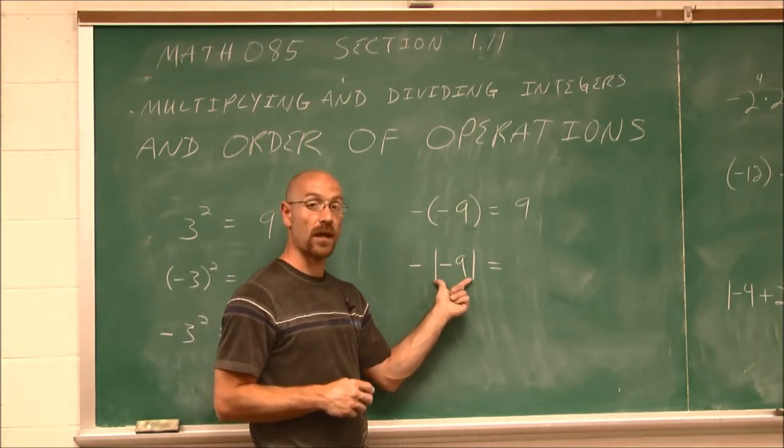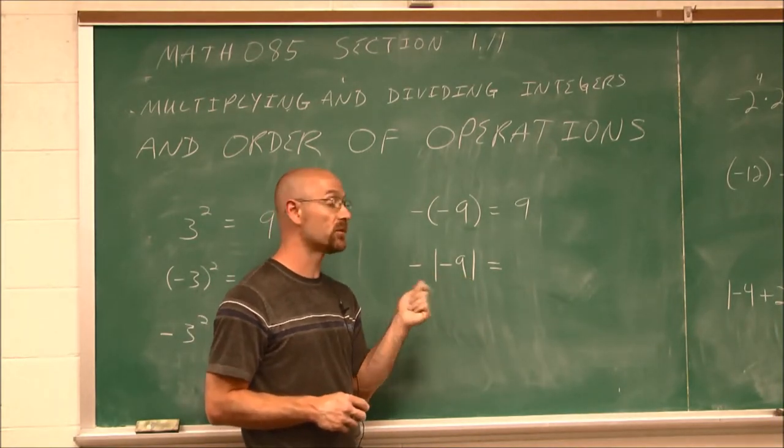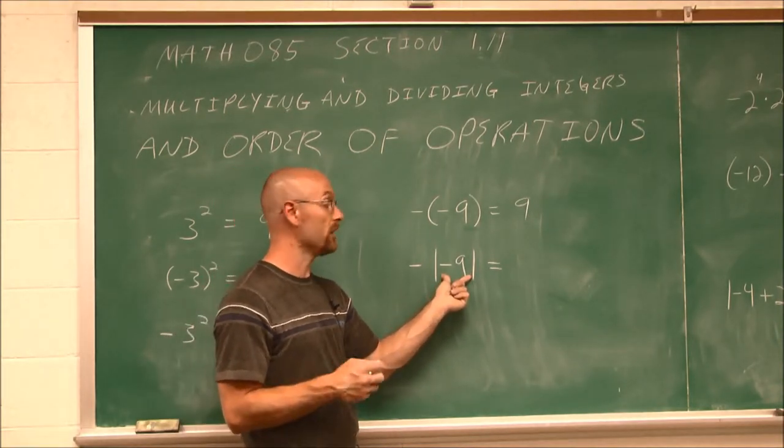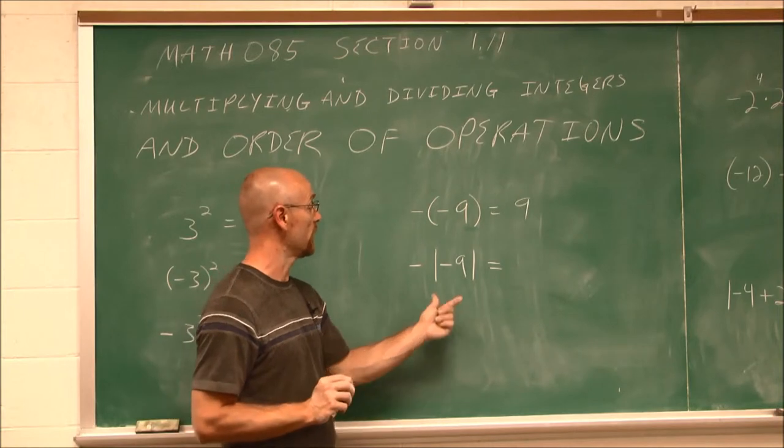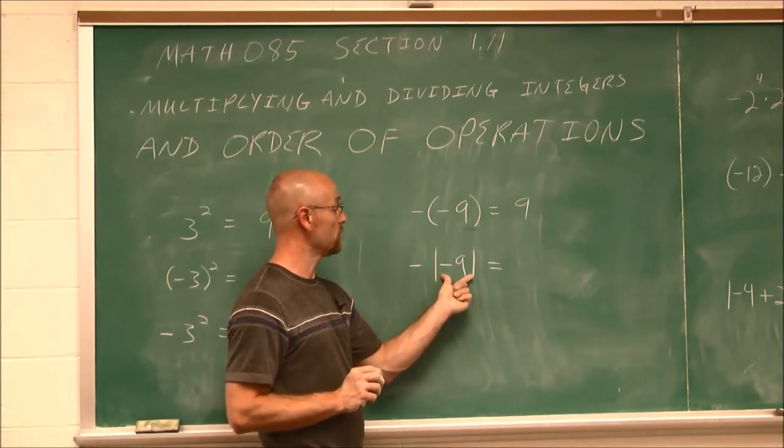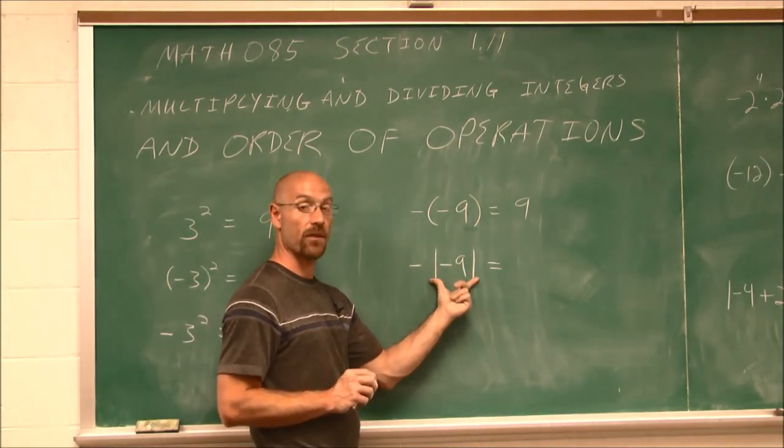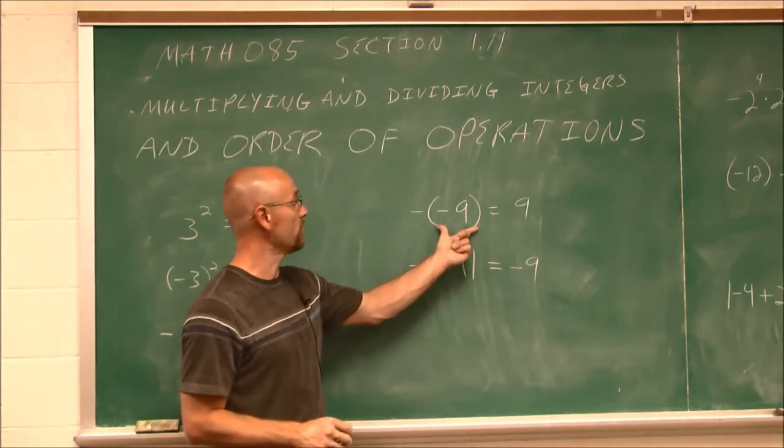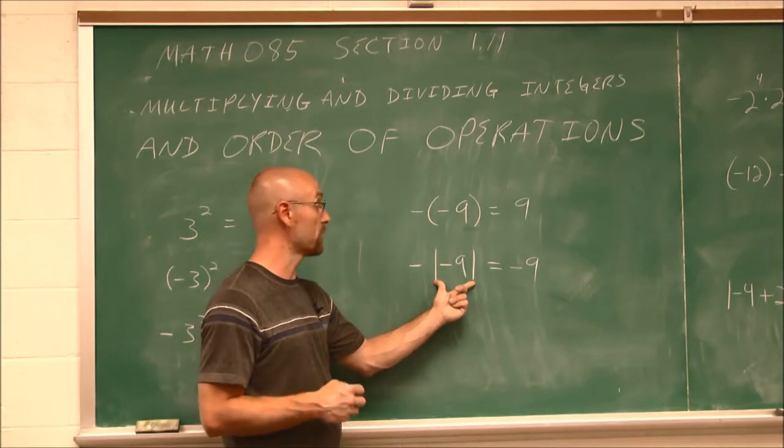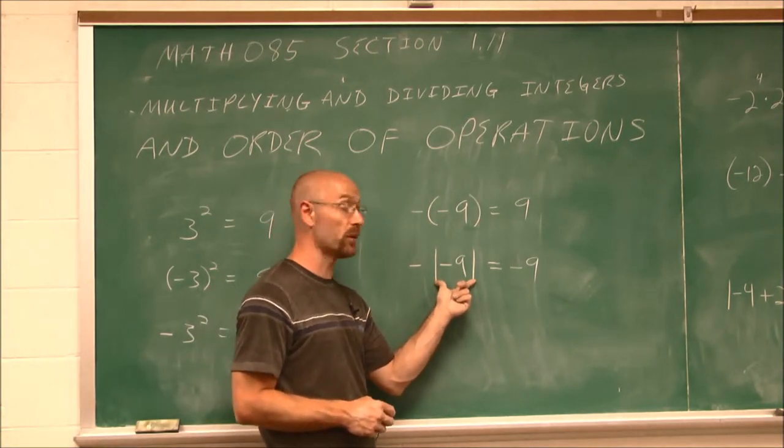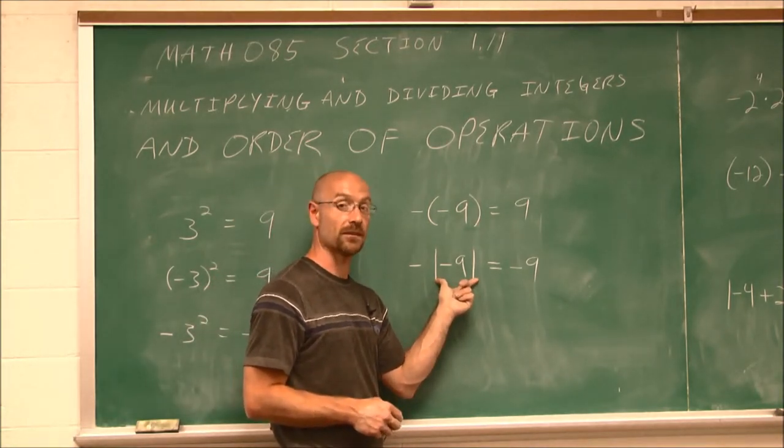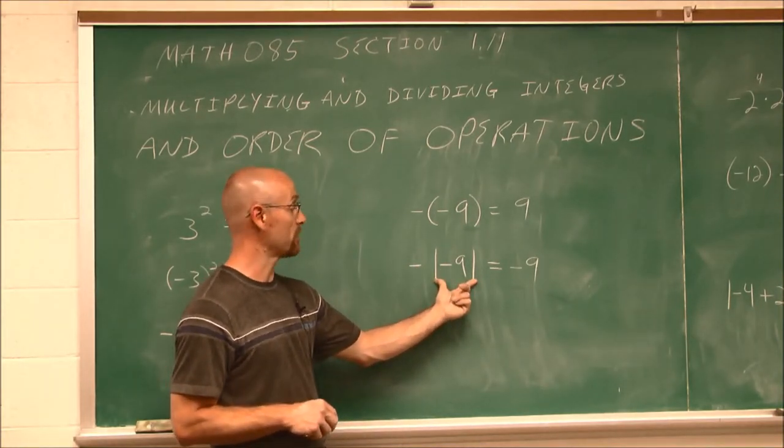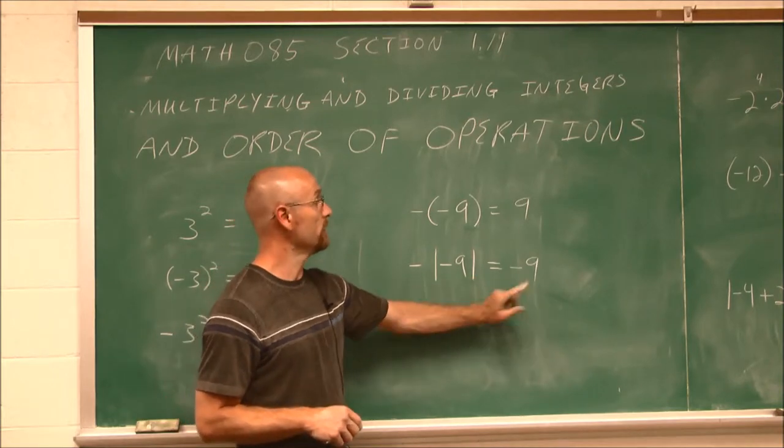Now, if we recall absolute values, absolute values say how far from 0 is this value? Well, negative 9 is 9 units from 0, or 9 tick marks on our number line. So it's 9 units away. I want the opposite of that. Well, the opposite of 9 is negative 9. So you can see how these grouping symbols are very different. This is a special grouping symbol that asks us for the distance, and distances are always positive. So the opposite of the absolute value of negative 9 is negative 9.